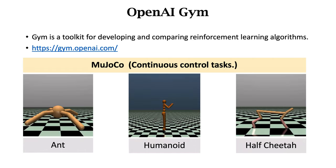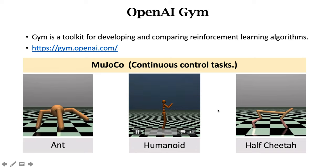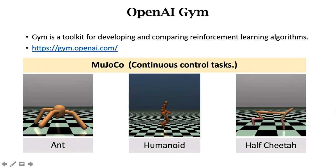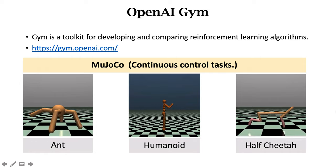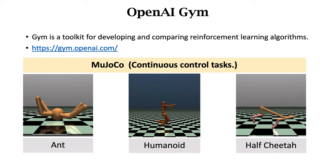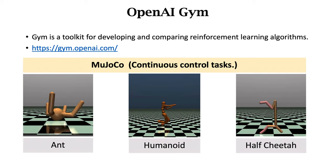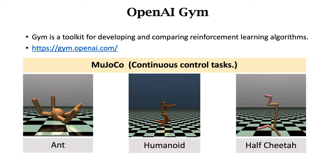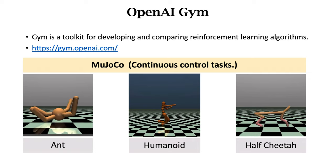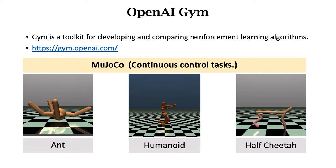The third kind of problem is continuous control tasks, including ant, humanoid, and half cheetah. The physical simulator used is called MuJoCo. It can simulate gravity and other forces, and the AI will learn to control the robots to stand and walk.